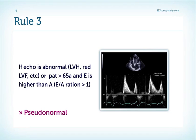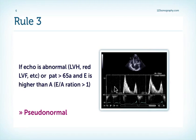Rule number three: if the echo is abnormal — in other words if the patient has hypertensive heart disease with left ventricular hypertrophy, reduced left ventricular function or any other pathology — and the patient is above 65 years of age and E is taller than the A wave (E to A ratio more than one), then the patient must have pseudonormal filling. He cannot have a normal filling pattern and left ventricular filling pressure is probably elevated.